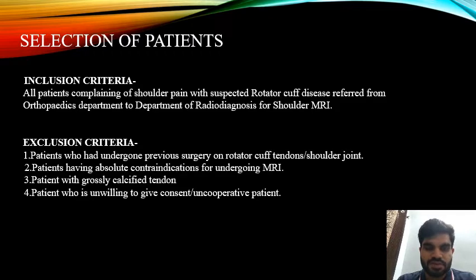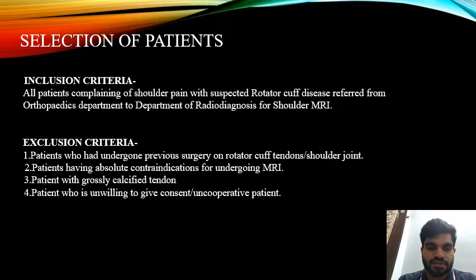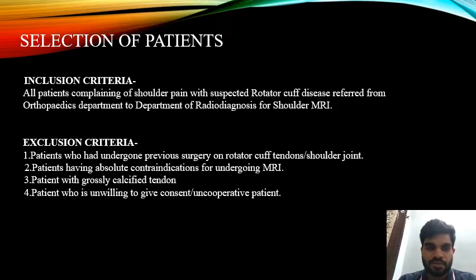Selection of patients. Inclusion criteria: all patients complaining of shoulder pain with suspected rotator cuff disease referred from orthopedics department to the department of radiodiagnosis for shoulder MRI. Exclusion criteria: patients who had undergone previous surgery on rotator cuff tendons or shoulder joint; patients having absolute contraindication for undergoing MRI; patients with grossly calcified tendon; and patients who are unwilling to give consent.